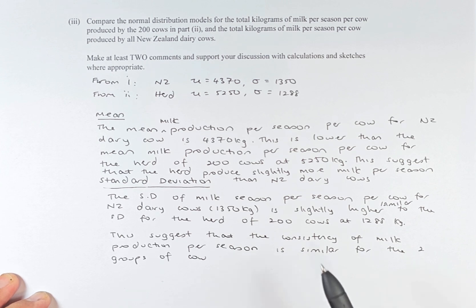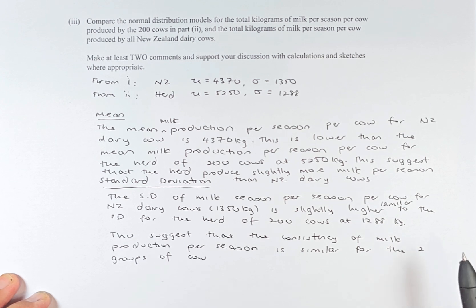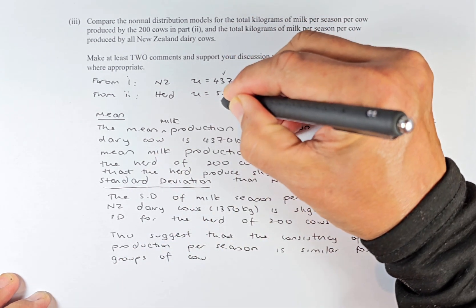You need to make at least two comments and support your discussion with calculations and sketches where appropriate. We do not need to do the normal distribution. We have done it in the two videos previously. So to compare the mean, we compare the New Zealand cows and the herd.